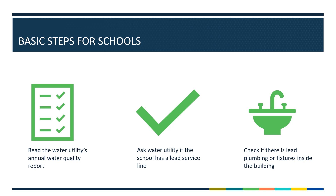Schools can also build a relationship with the public water system that serves their facility, who can provide important information including if the school has a lead service line. Next, schools can check if there is lead plumbing or fixtures inside the school building. Visual inspections can help, but the only way to know if lead is entering water from plumbing parts is by testing samples of tap water.